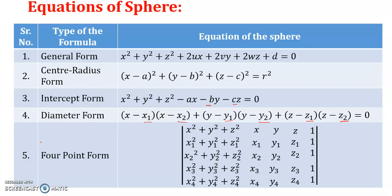The fifth form: if four points (x₁,y₁,z₁), (x₂,y₂,z₂), (x₃,y₃,z₃), and (x₄,y₄,z₄) are given, the equation of a sphere in four-point form is obtained by evaluating a 5×5 determinant. The first column contains (x²+y²+z²) and the corresponding sum of squares for each point. The second, third, and fourth columns contain the x, y, and z coordinates of each point, and the fifth column is the constant 1. Evaluating this determinant gives the equation of the sphere.